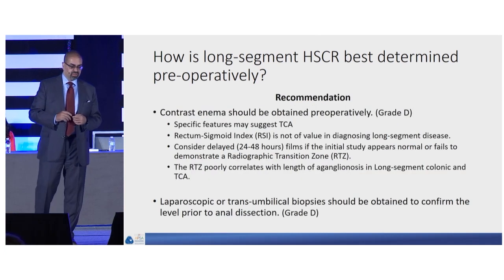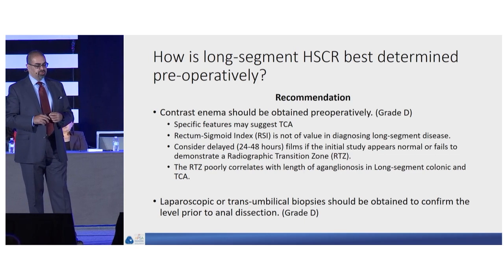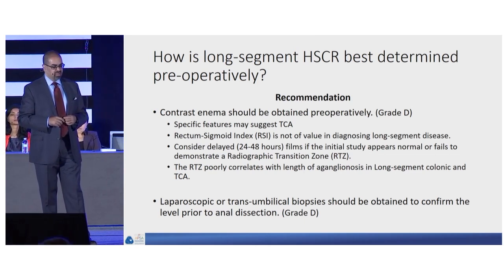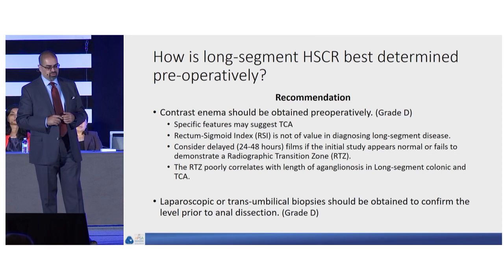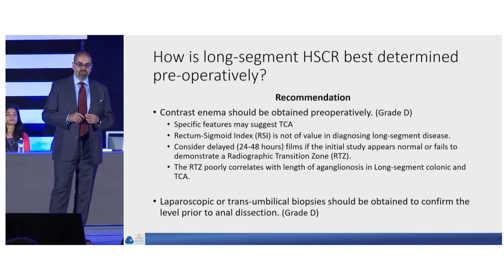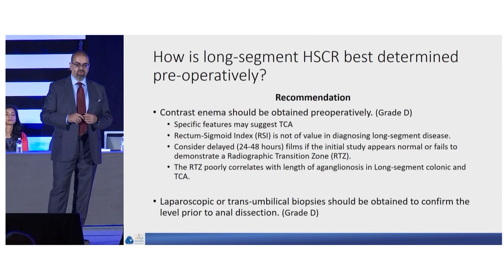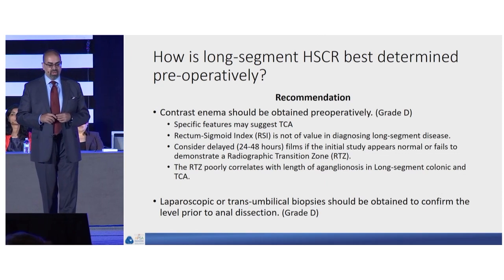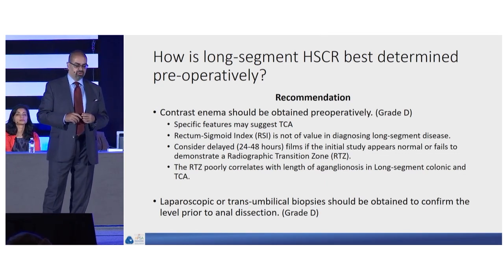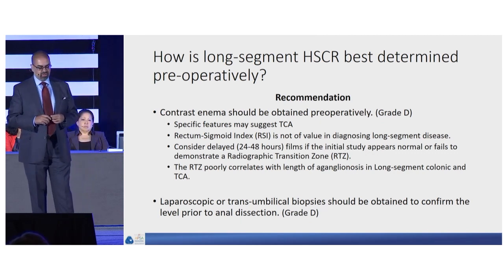We recommend that contrast enema should be obtained preoperatively. There are specific features that may suggest total colonic aganglionosis. The rectosigmoid index is not of value in diagnosing long-segment disease. We should consider delayed films if the initial study is normal or fails to demonstrate a radiographic transition zone. However, the radiographic transition zone poorly correlates with the length of aganglionosis in total colonic and long-segment disease. We also suggest that laparoscopic or transumbilical biopsy should be obtained to confirm the level of aganglionosis prior to starting any anal dissection.